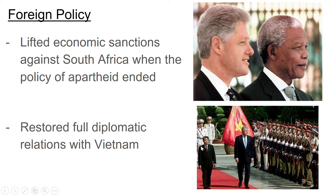The last thing we're going to talk about is that Clinton restored our diplomatic relations with Vietnam. Remember, after Vietnam, once it turned communist, we basically left and said we're done with it — we're not even going to recognize it or trade with them anymore. Years had passed, and so Bill Clinton said we're going to restore our relationships and fix our friendship and relations with Vietnam.